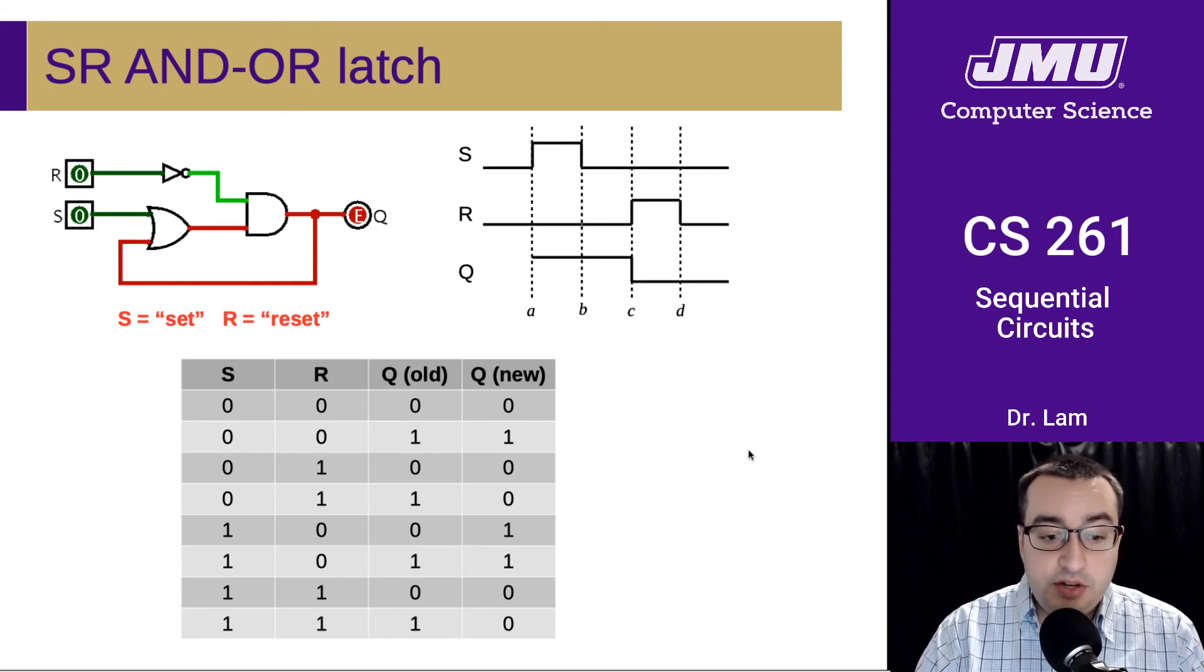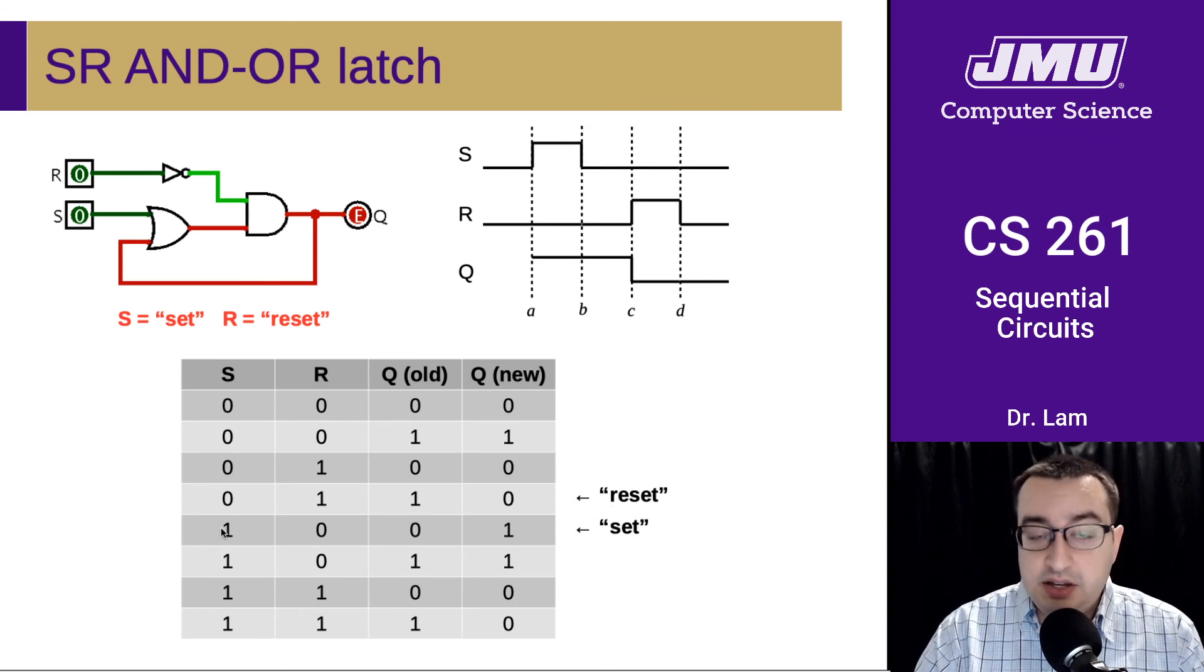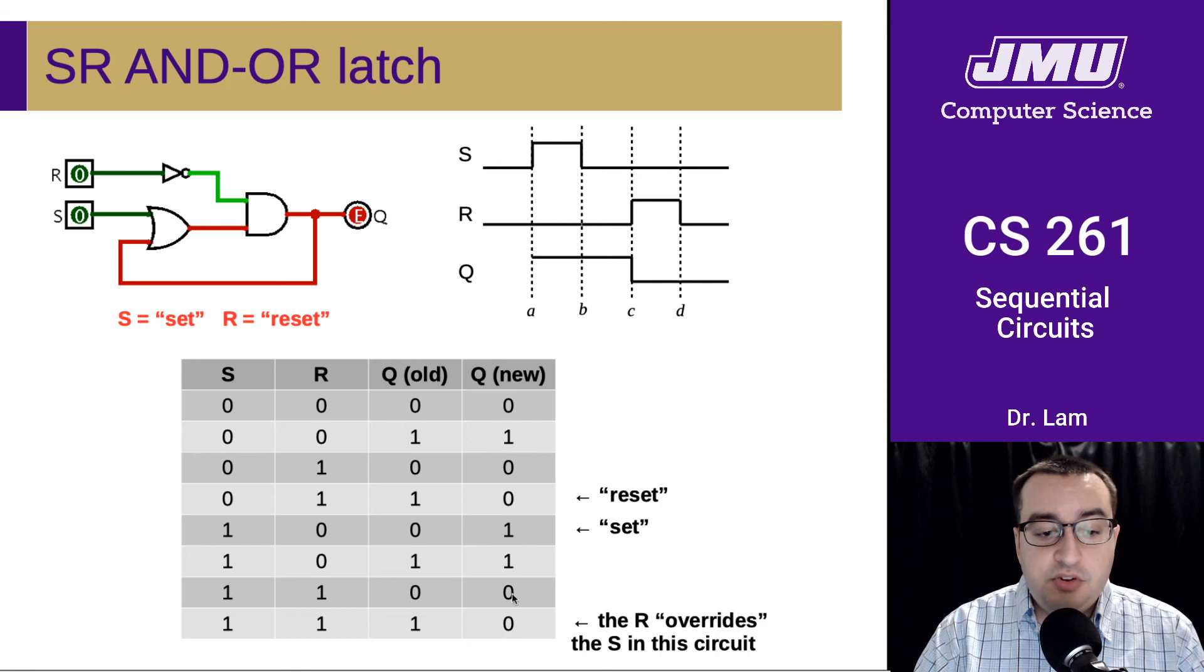There are, of course, a couple of exceptions. So the first exception is here, where the one changes to a zero. And that's when the R input is set. So that's the reset. So it's resetting from one to zero. And, of course, the opposite, where we have the S bit on, where we're now changing Q from zero to a one.